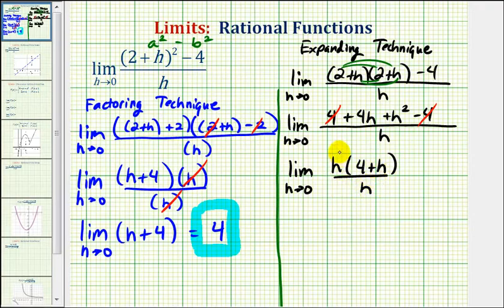Notice in this form, we have a factor of h over a factor of h, which again graphically means we'd have a hole at h equals zero, which does not affect the limits. So we can write this as the limit as h approaches zero of four plus h.